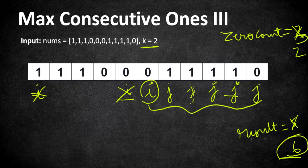This basic sliding window technique runs in O(n) time complexity since we iterate the window only once.